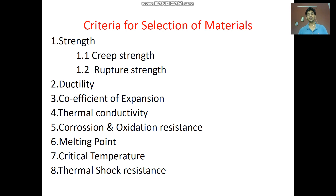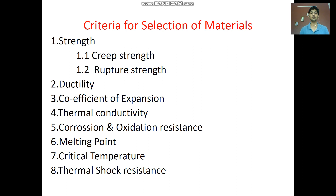Thermal conductivity is the next criterion, mainly relevant to the cooling process. For example, if the combustor liner material does not have good thermal conductivity, continuous cooling of those liners cannot be maintained, leading to liner failure. Similarly, turbine blades and the afterburner section require good thermal conductivity so that the cooling process is continuous, and material selection is decided on that basis.